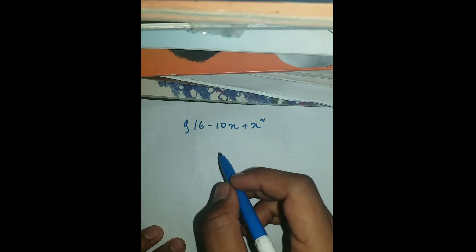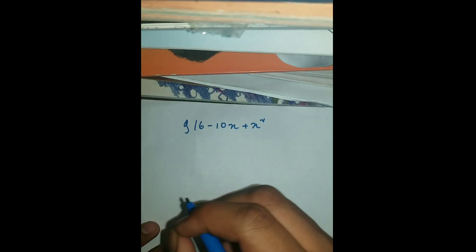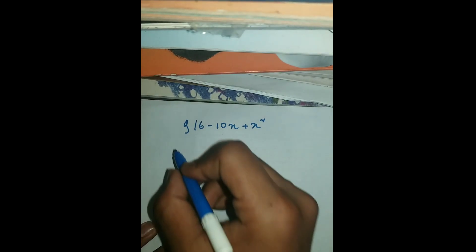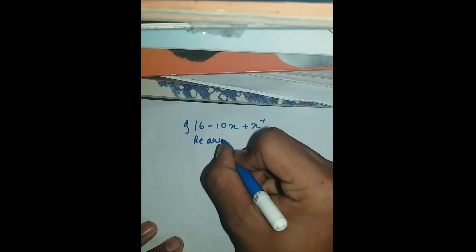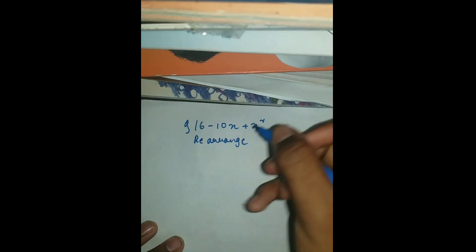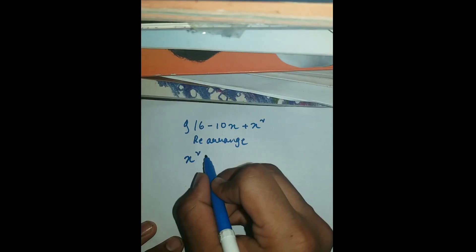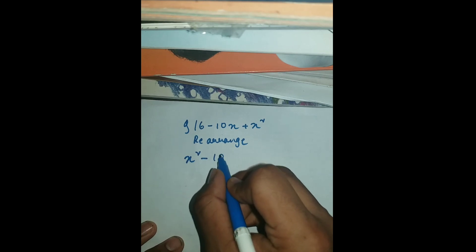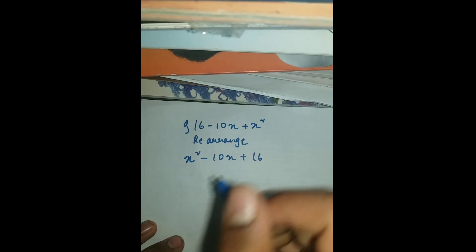First of all, as you can see here is the equation. But it's not in the right form, so what we're gonna do is rearrange it. So like this — rearranged, it should be x squared minus 10x plus 16.